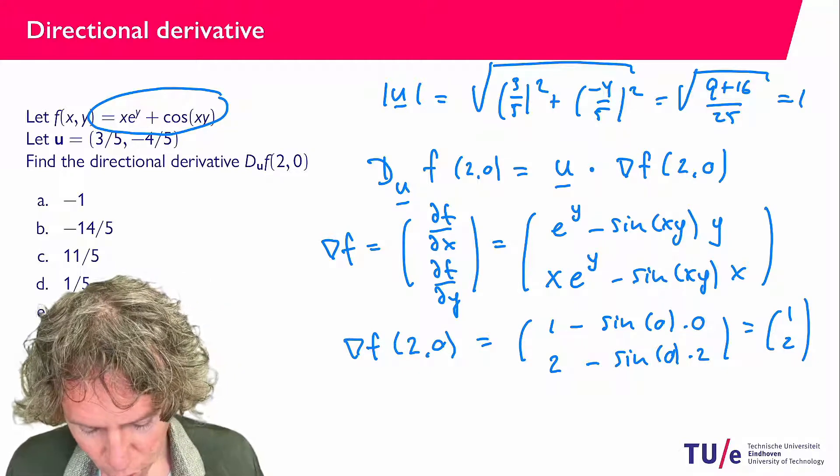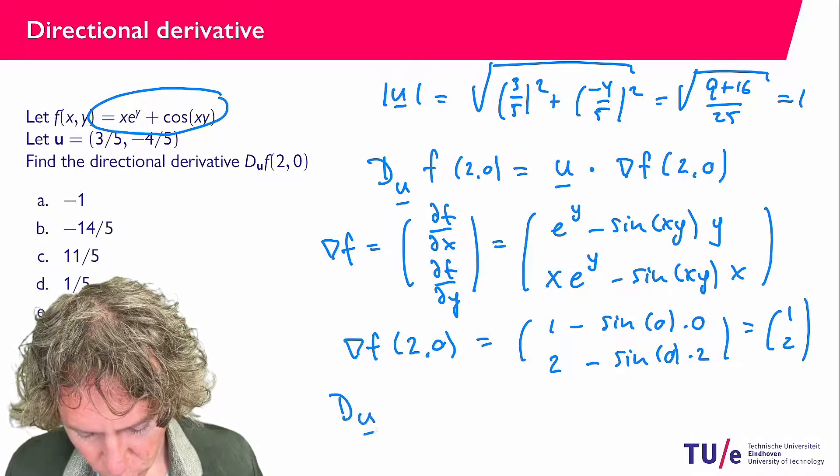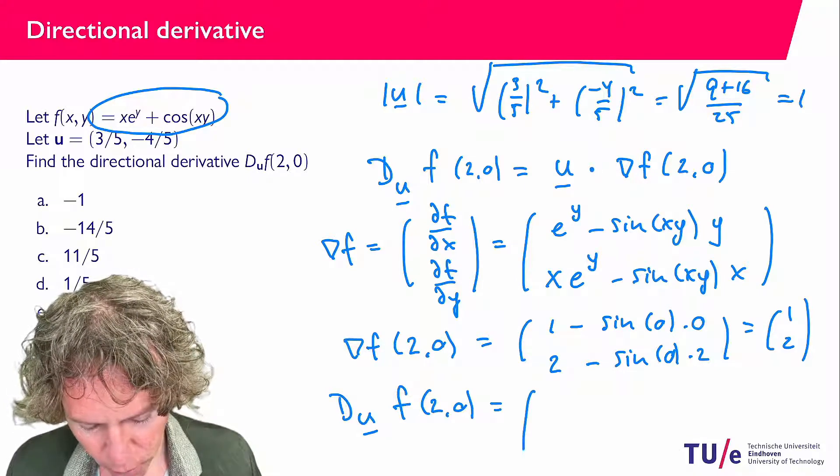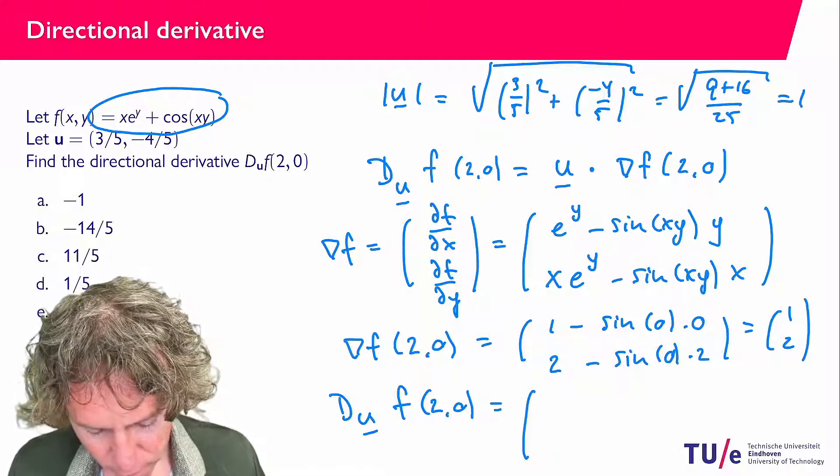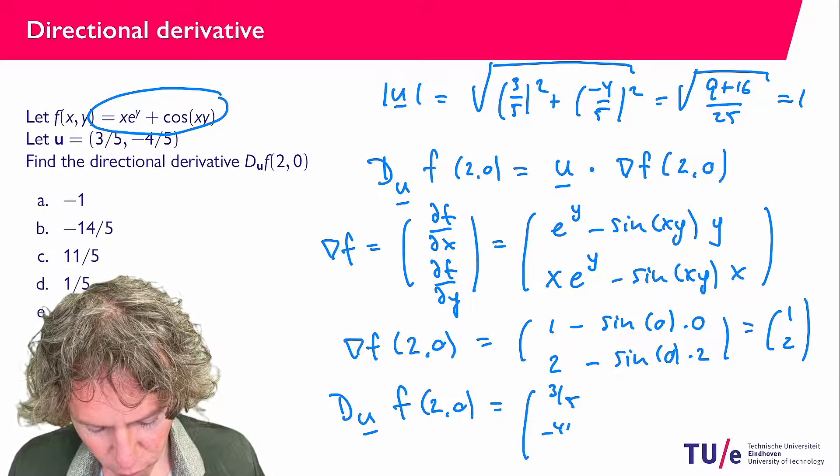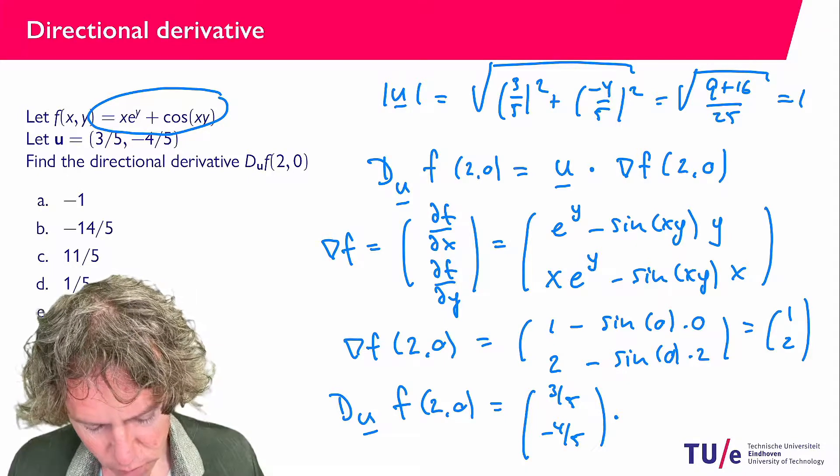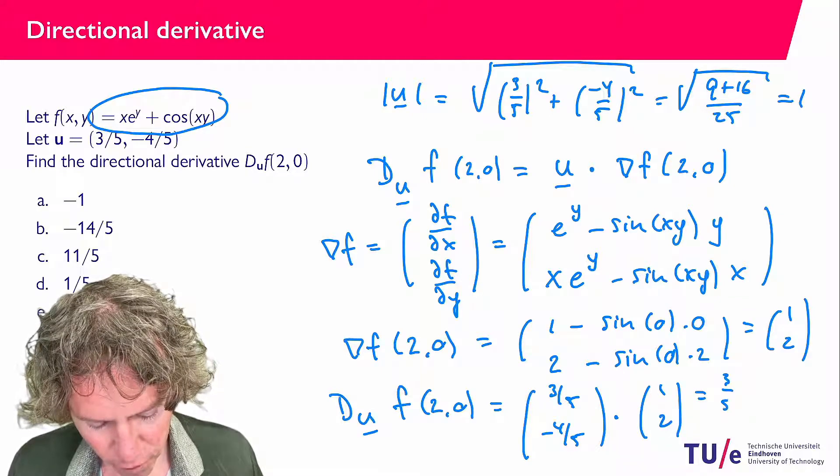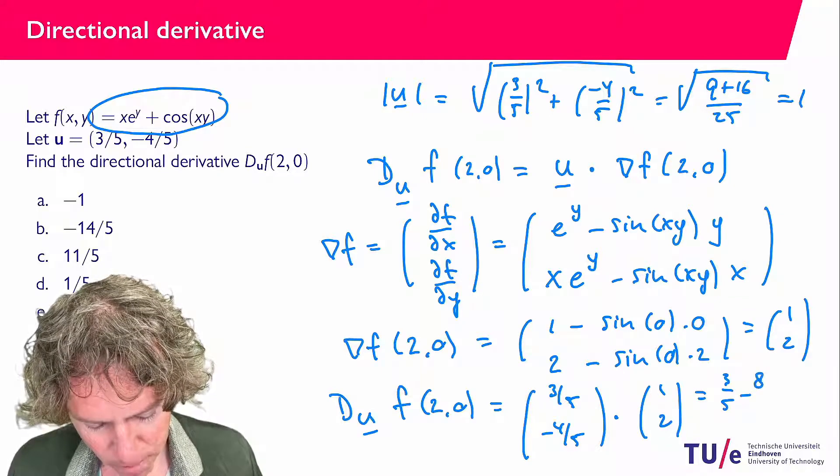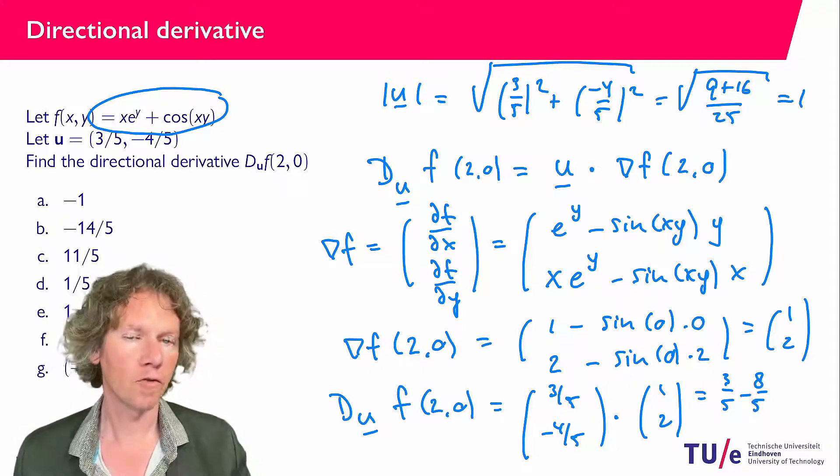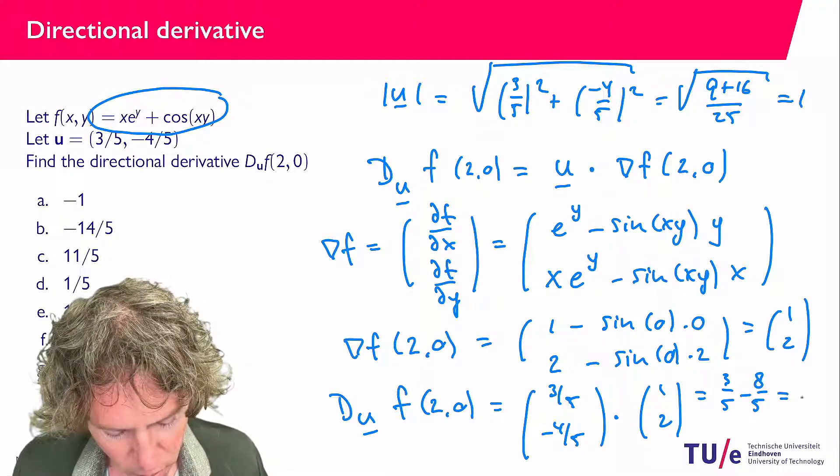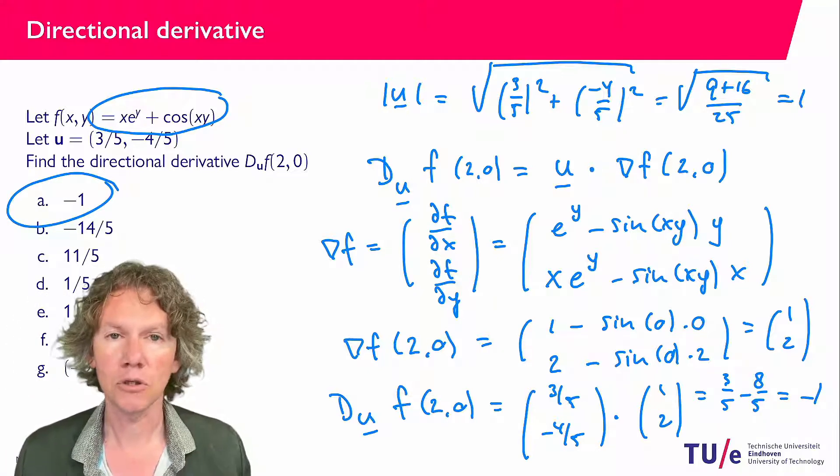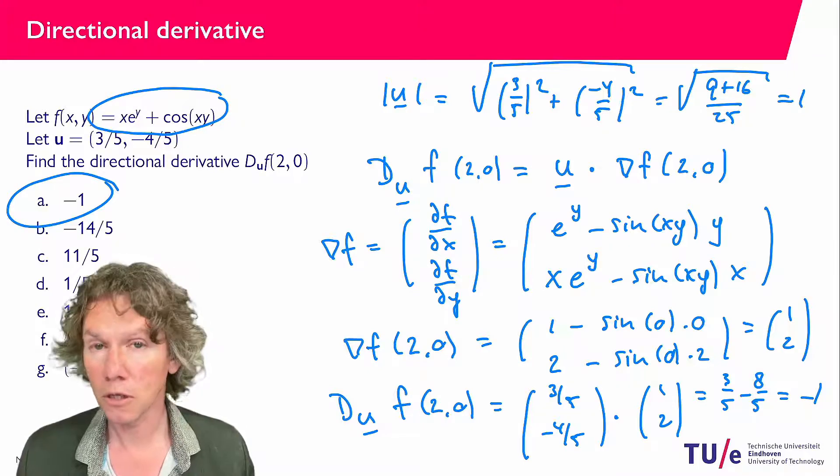What we get is that D_u f(2,0) is now the dot product of the vector (3/5, -4/5) with the vector (1,2), so what we get is 3/5 minus 8/5, which is -5/5, which is -1. So the correct answer is answer a, and that answers this question. Thanks for watching, I'll see you in the next video.